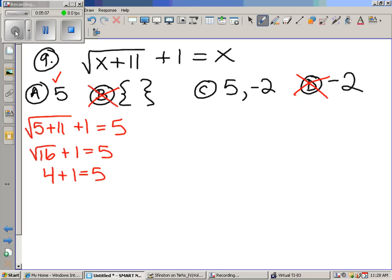which automatically means this is out and this is out. Oh, that's amazing. Whoa. Now, here's what we have to do. Choice C says that both five and negative two work. So we've got to check to make sure that negative two works in this one.